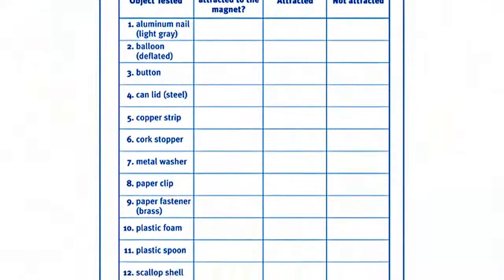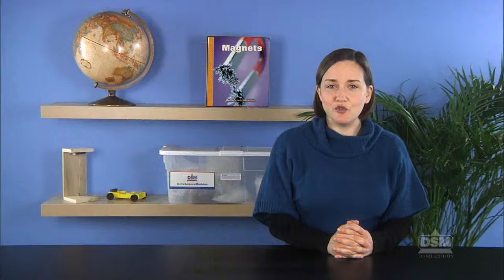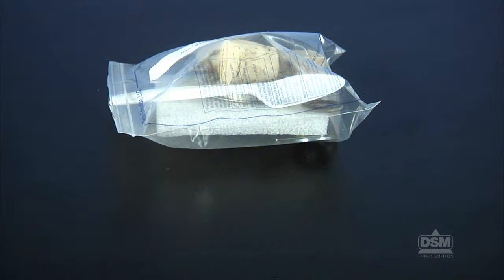To prepare for the activity, make a copy of Activity Sheet 1 for each student. Each group of four students will need one bag of magnetic and non-magnetic objects and two small bar magnets.